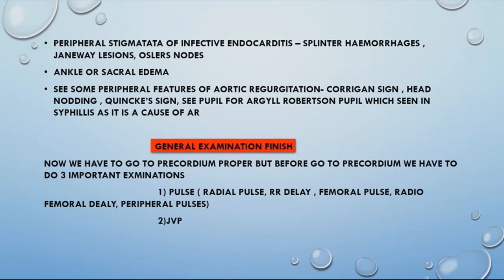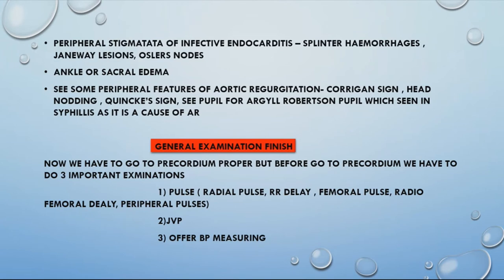The second important examination is measuring the JVP — this will be explained in a coming lecture. The third is offering to measure blood pressure. We offer to the examiner: 'I would like to measure the patient's BP,' and when the examiner says yes, we proceed.